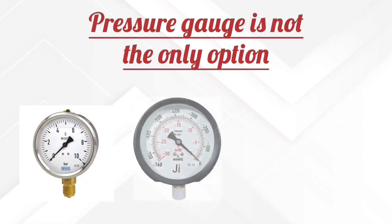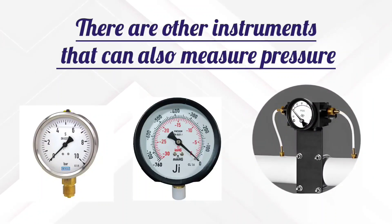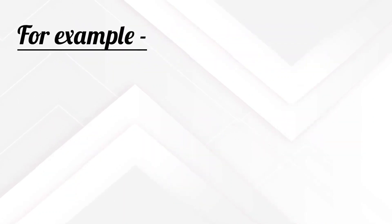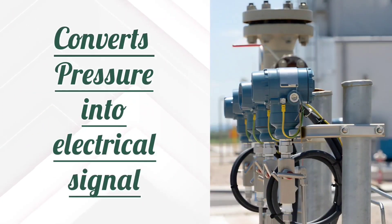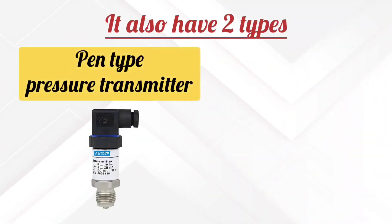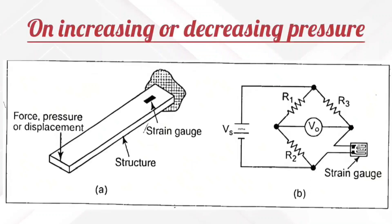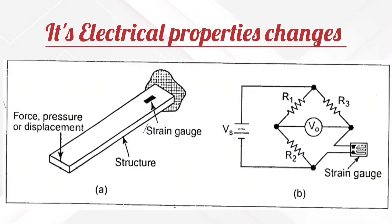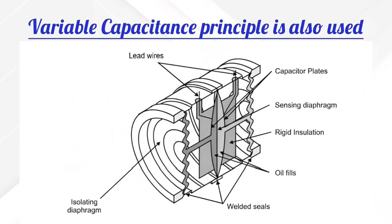But the pressure gauge isn't just the only option. Instrumentation also consists of other instruments that can measure pressure. For example, a pressure transmitter, which converts the pressure into an electrical signal. There are two types: pen type and smart pressure transmitter. Transmitters use a strain gauge, which changes its electrical properties when pressure is increased or decreased. Apart from this, the variable capacitance principle is also used in these.